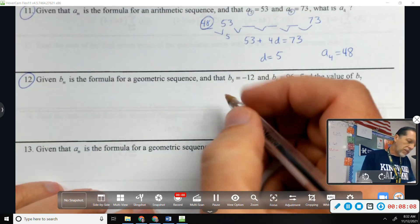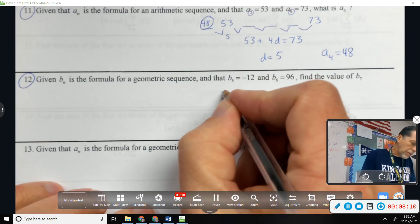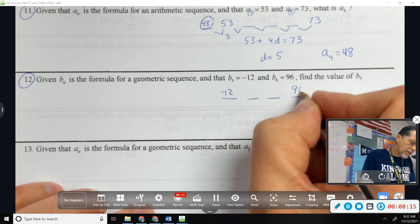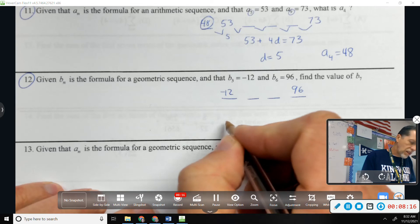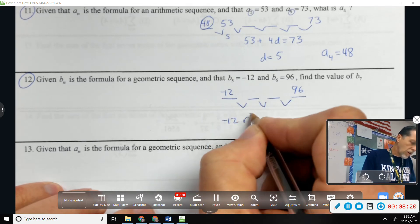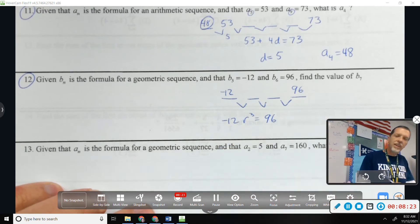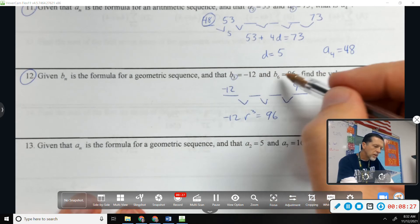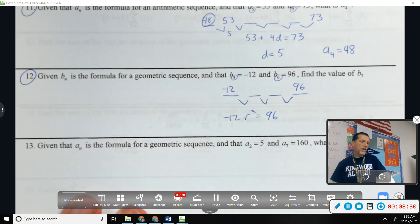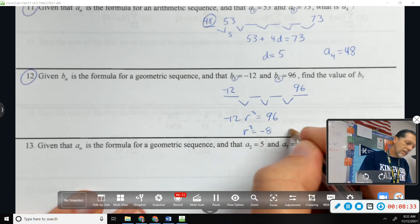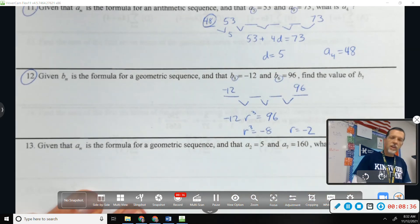b_3 to b_6. Again, same kind of thing. b_3, 4 and 5, we don't know. b_6 is 96. So negative 12 times r^3 times is 96. b_6 or just from 3 to 6 is 3 steps either way. So r^3 is negative 8, which means r is negative 2.